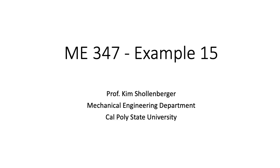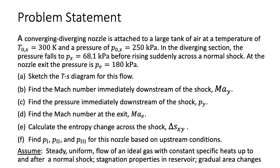ME347, Example 15. A converging-diverging nozzle is attached to a large tank of air at a temperature of 300 Kelvin and a pressure of 250 kilopascals. In the diverging section, the pressure falls to 68.1 kilopascals before rising suddenly across a normal shock. At the nozzle exit, the pressure is 180 kilopascals.